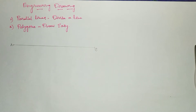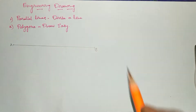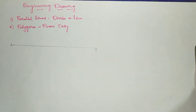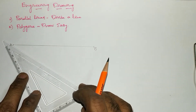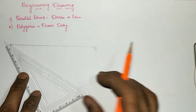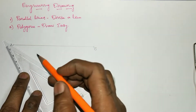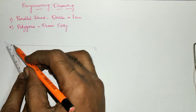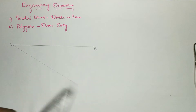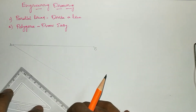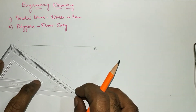First let me explain how to divide a particular line of given length. I am considering the line AB, and let us suppose that we have to divide this line AB into 7 equal segments. For that, I am going to draw a line at some angle less than 90 degrees from A, and then divide this slanting line into 7 equal parts.